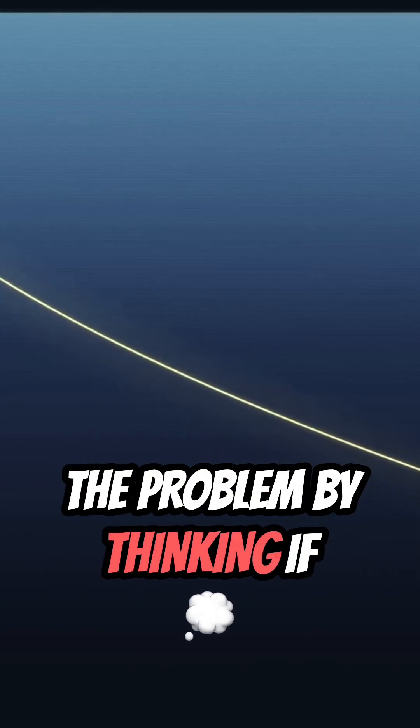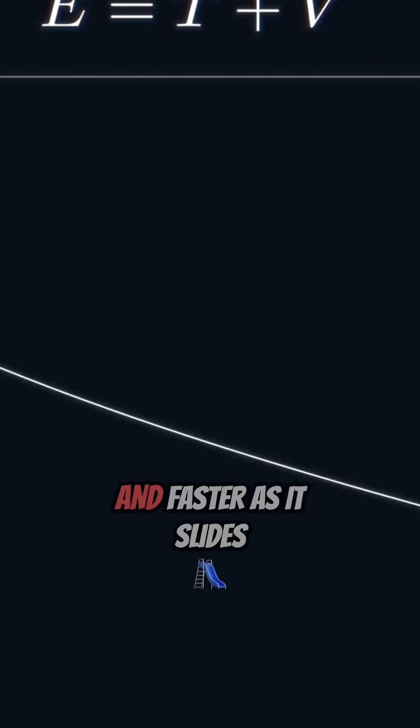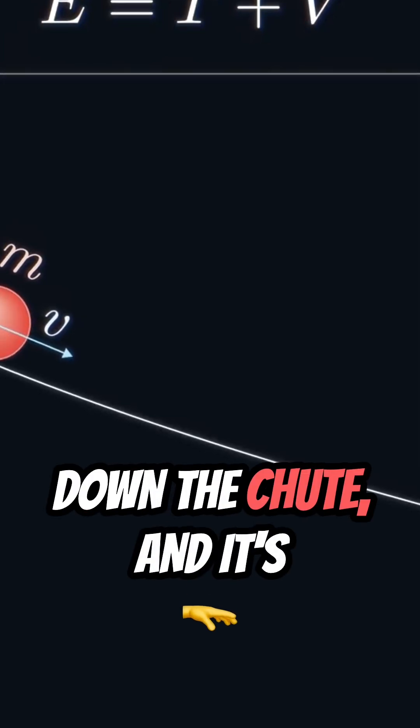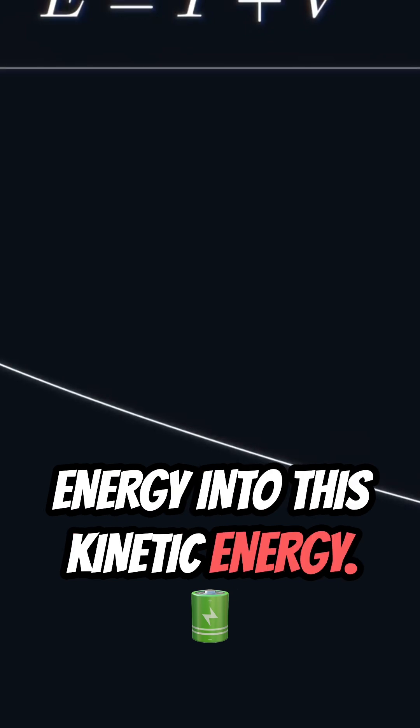You could try to solve the problem by thinking if the particle has to fall from A to B, it's going to be picking up kinetic energy. It's going faster and faster as it slides down the chute, and it's converting the loss in potential energy into this kinetic energy.